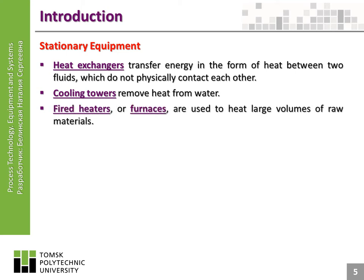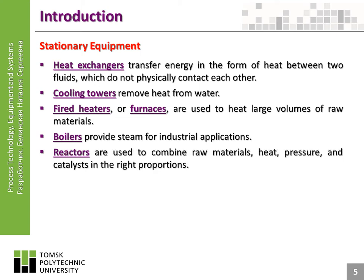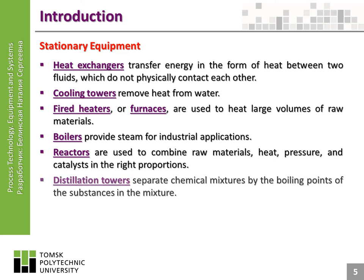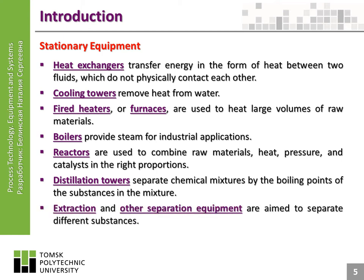Fired heaters, or furnaces, are used to heat large volumes of raw materials. Boilers provide steam for industrial applications. Reactors are used to combine raw materials, heat, pressure, and catalysts in the right proportions. Distillation towers separate chemical mixtures by the boiling points of the substances in the mixture. Extraction and other separation equipment are aimed to separate different substances.